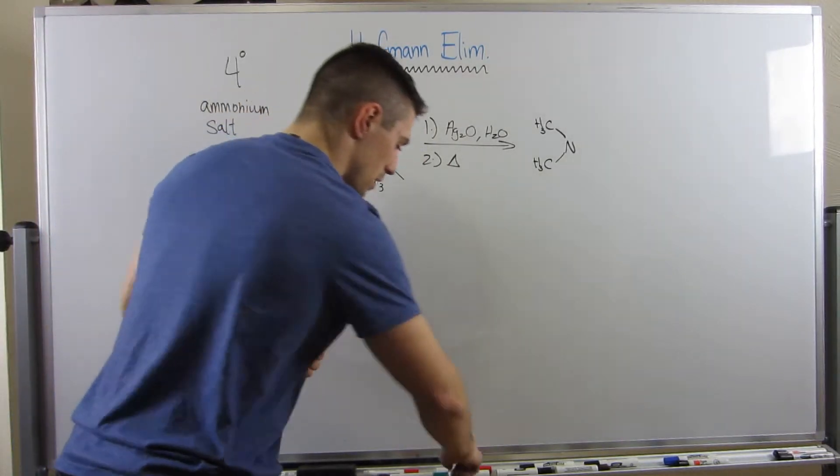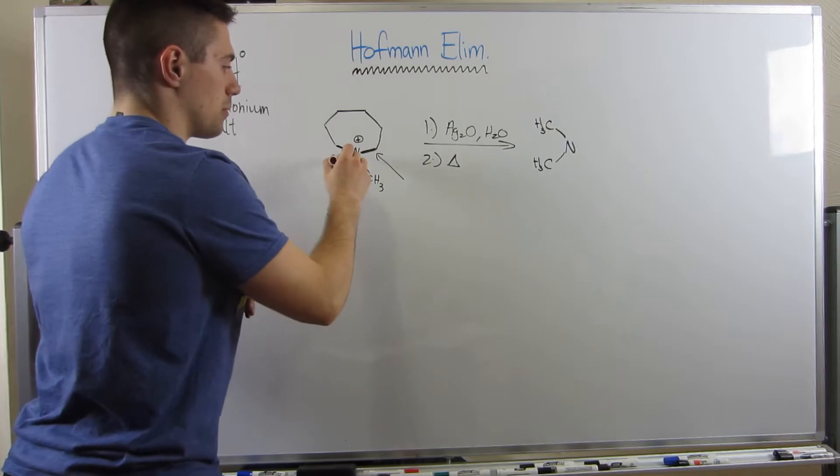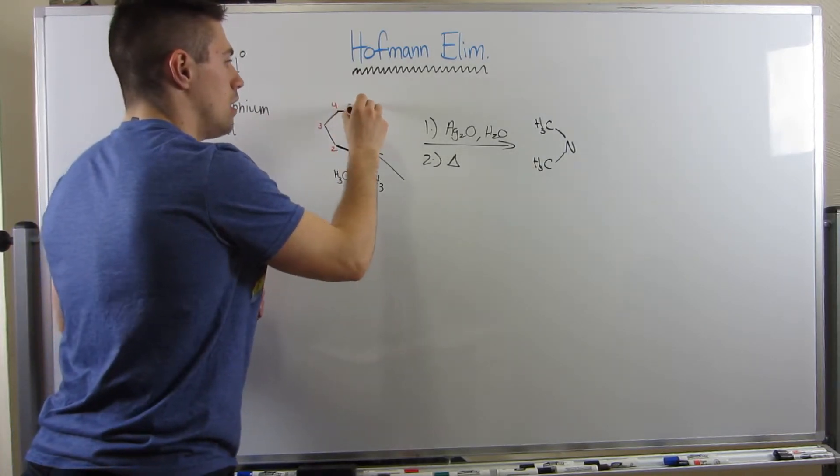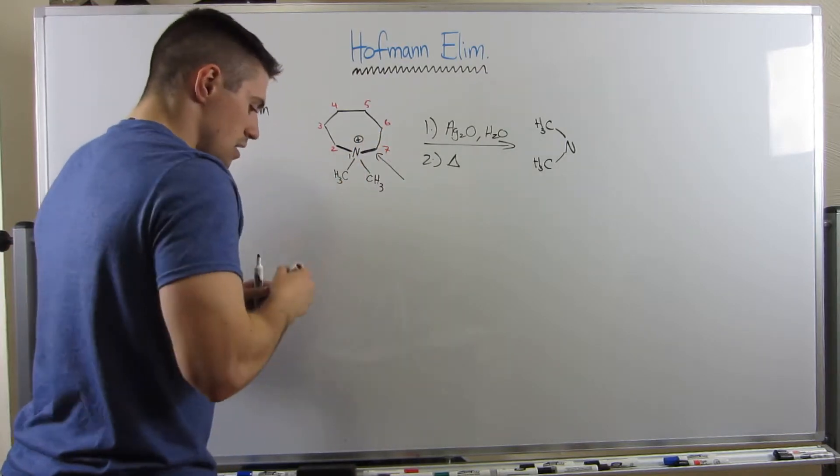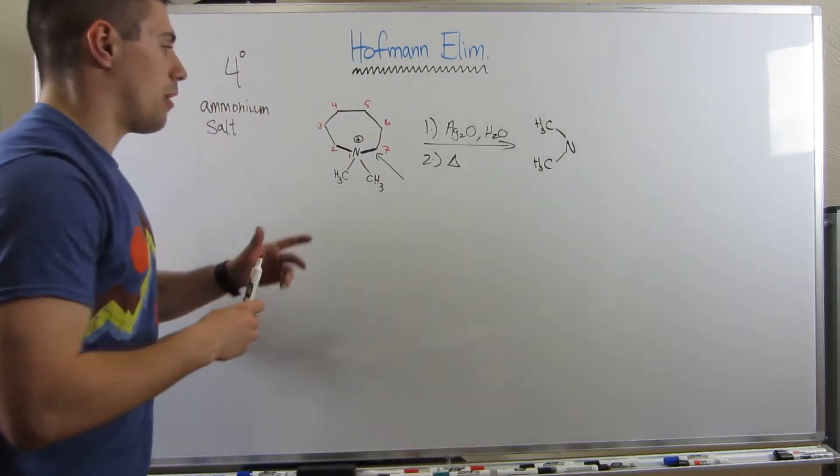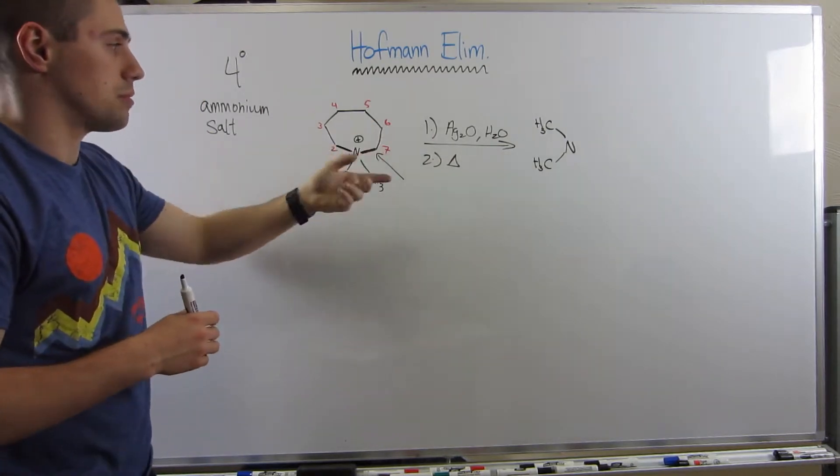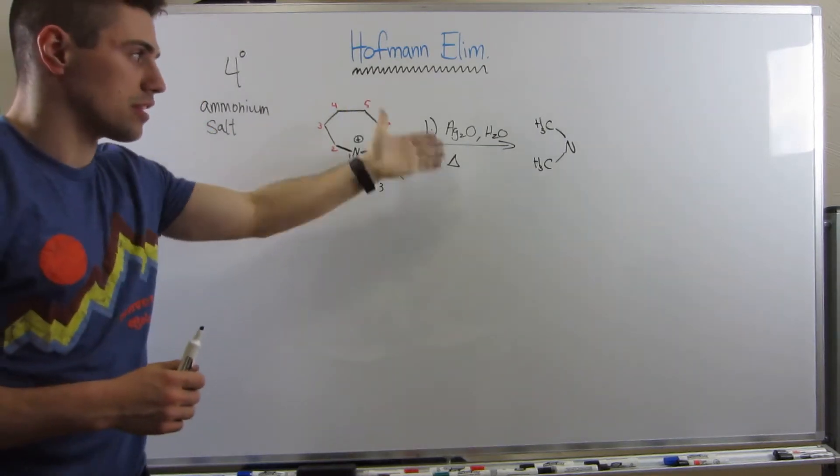So, what I'm going to do is number the elements in my ring. Nitrogen would be 1, this carbon would be 2, 3, 4, 5, 6, and 7. So, the bond between 1 and 7, nitrogen and carbon is going to break. We're going to form a double bond between 6 and 7 with these reagents.